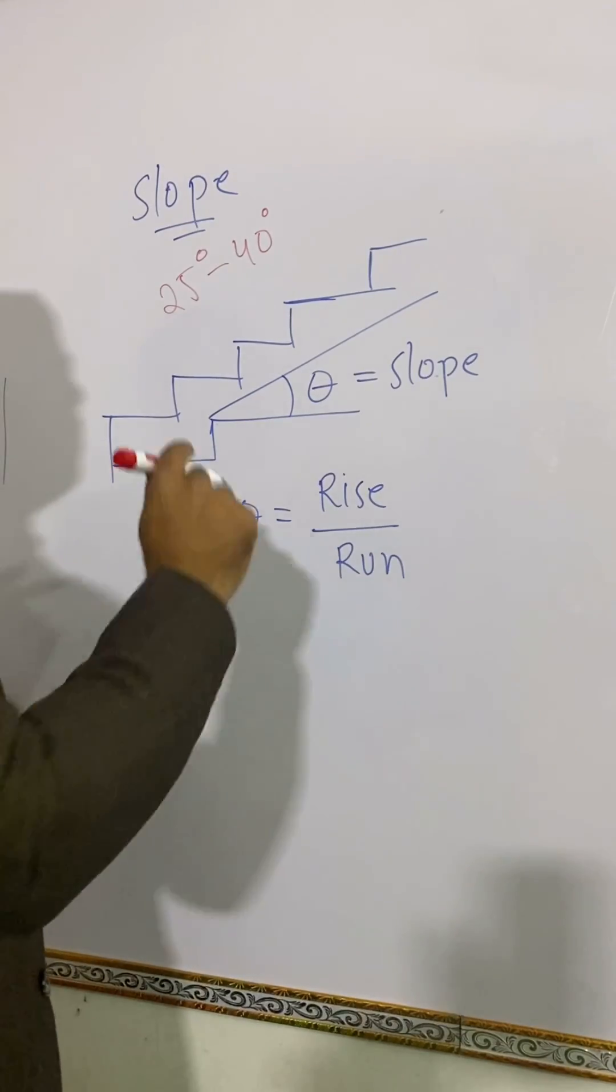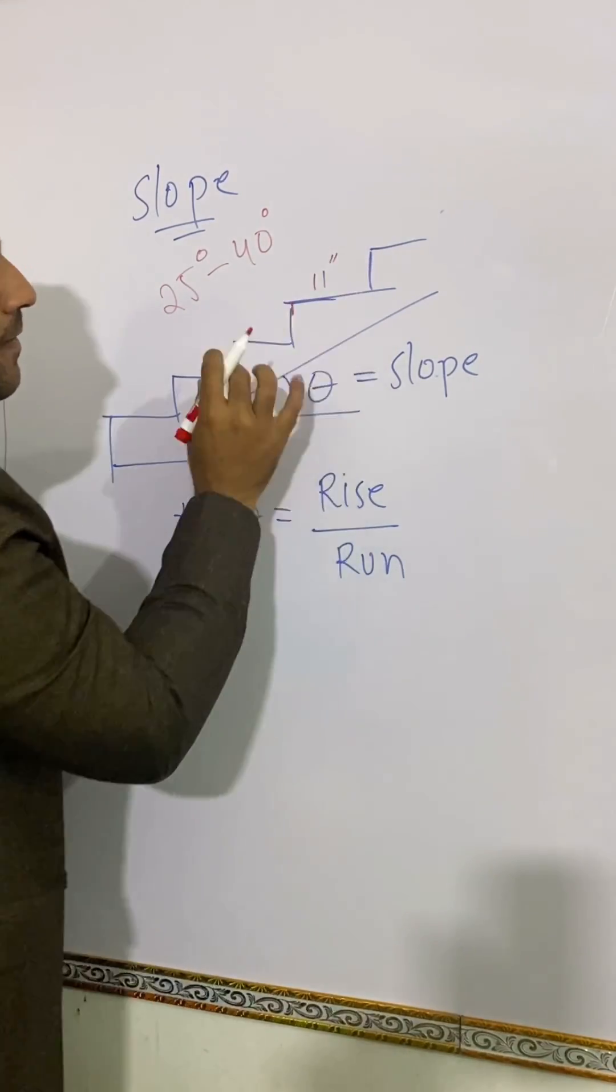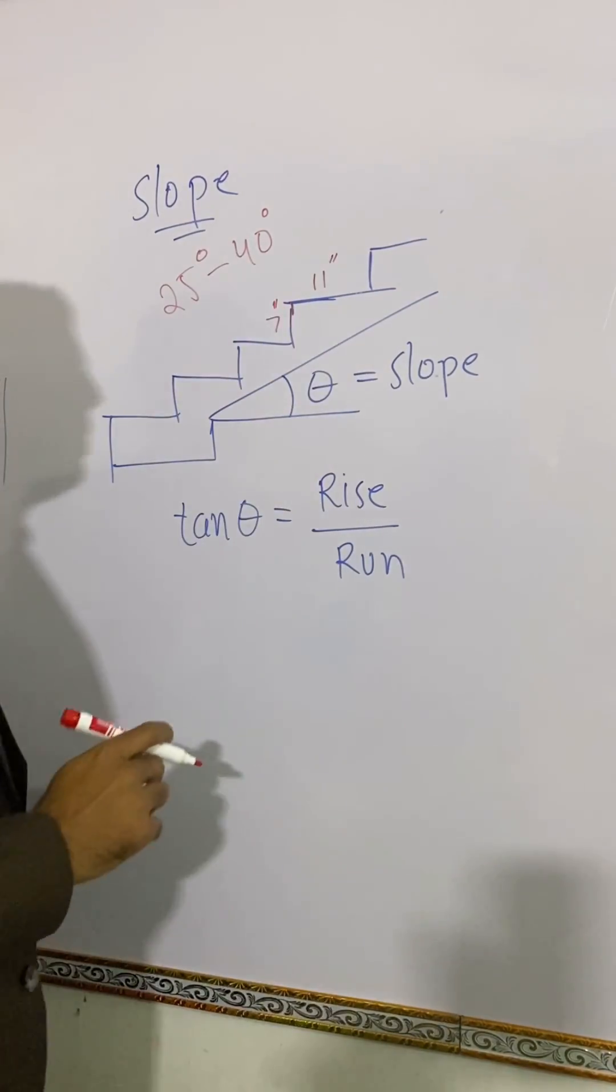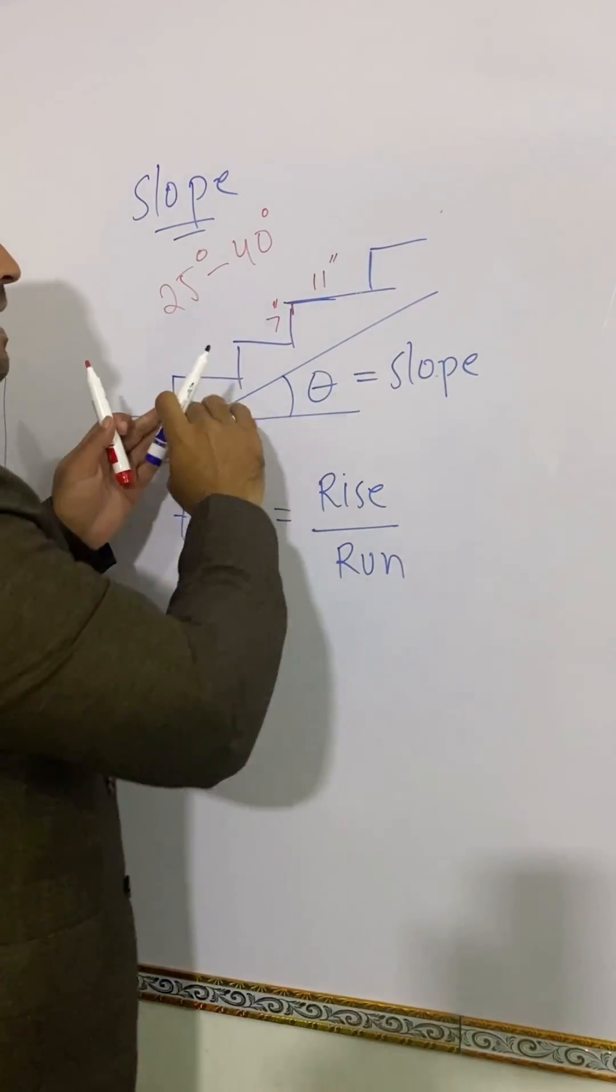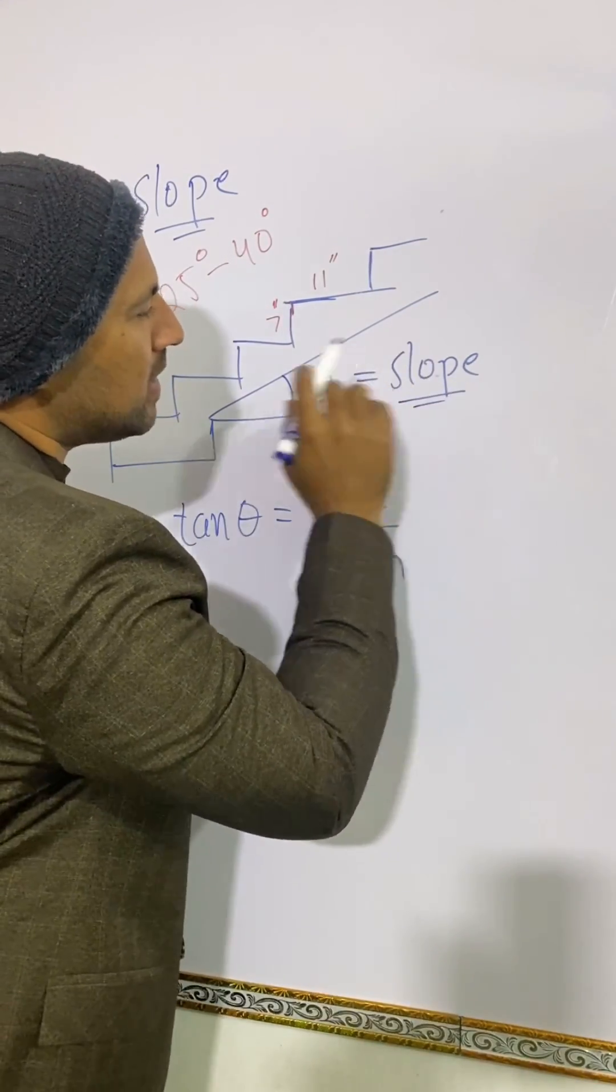Now let's assume we have a run of 11 inches for the same staircase and a rise of 7 inches. If we have these parameters, what should be the slope?